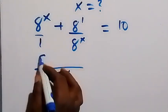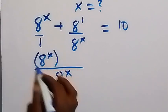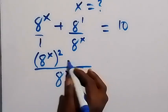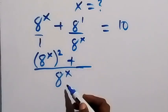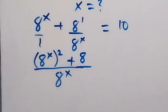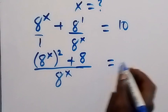It's multiplied by itself, so it's the same thing as squaring it. Then plus, here 8 raised to power x goes in 8 raised to power 1. 1 times 8 raised to power 1 is 8. Then equals to 10.